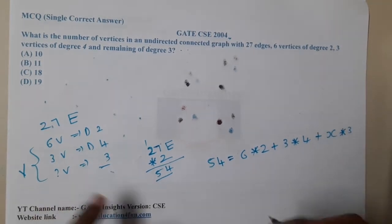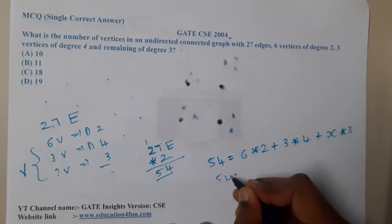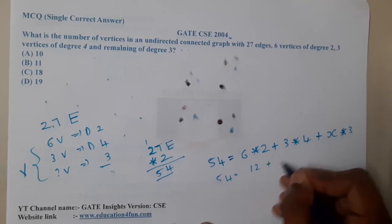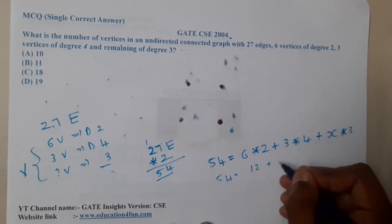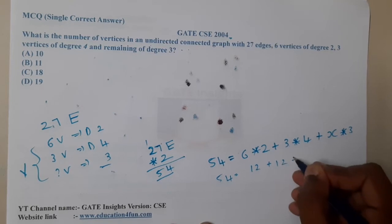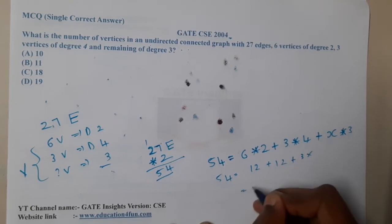So 54 equals 12 plus 12 plus 3x. It is nothing but 54 minus 24 is 3x, which is 30.